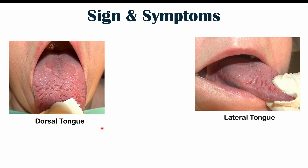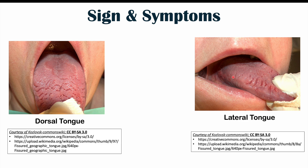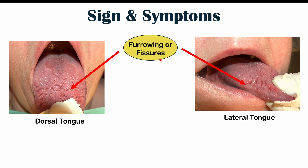Regarding signs and symptoms: when we look at the dorsal and lateral tongue, we can see furrowing or fissures — big ridges or deep fissures. Most of the time, that will be the only clinical feature. There's typically no pain and nothing else except the visible deep fissuring. Most of the time, patients are asymptomatic except for those deep fissures on the tongue.